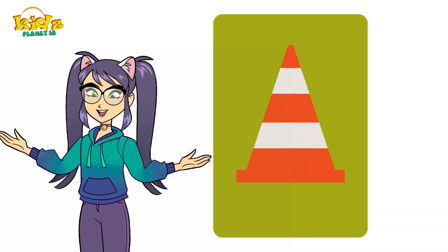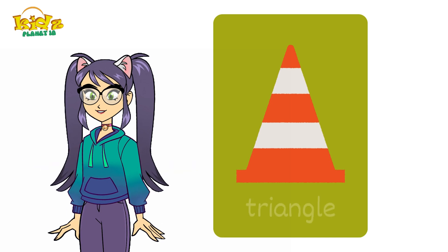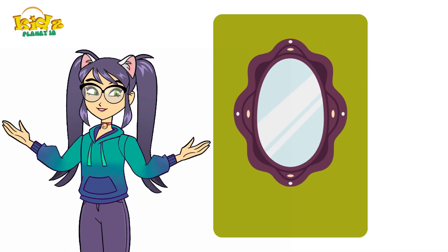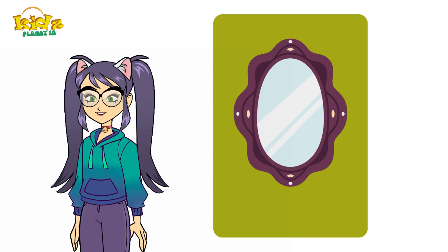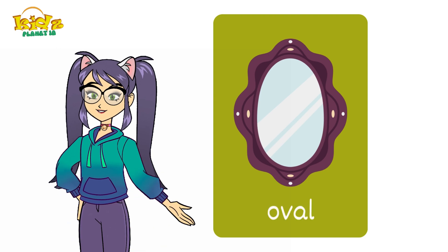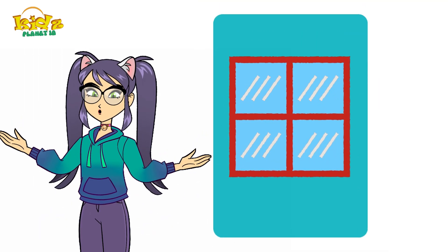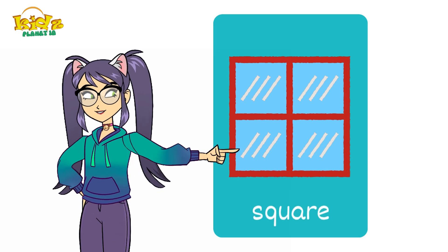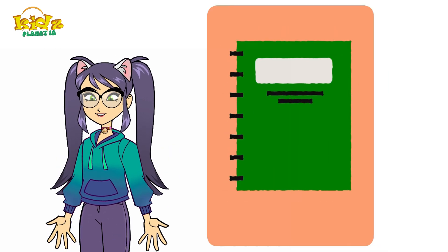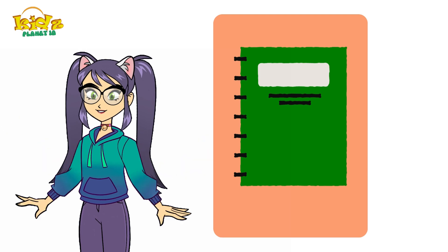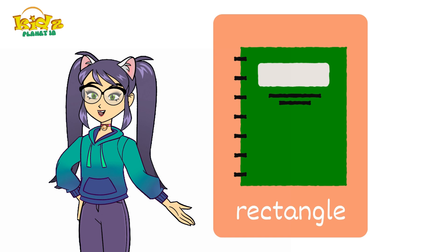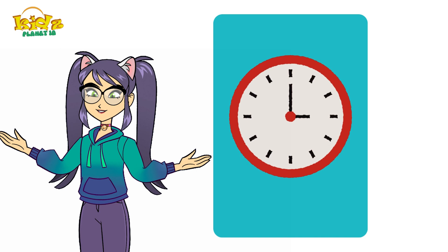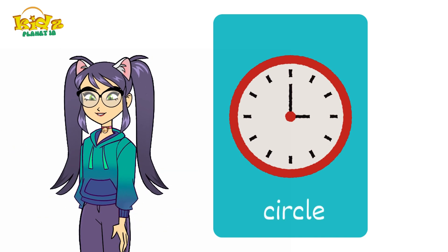Which shape is this? Oval. Which shape is this? Oval. Which shape is this? Oval. Which shape is this? Rectangle. Which shape is this? Circle.